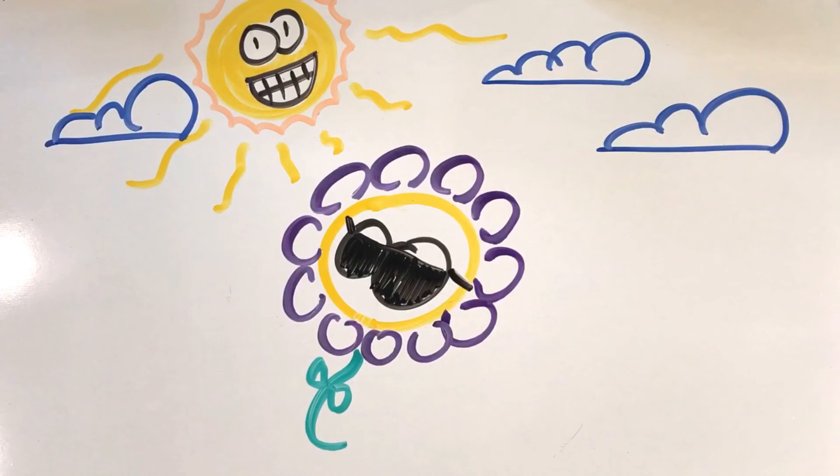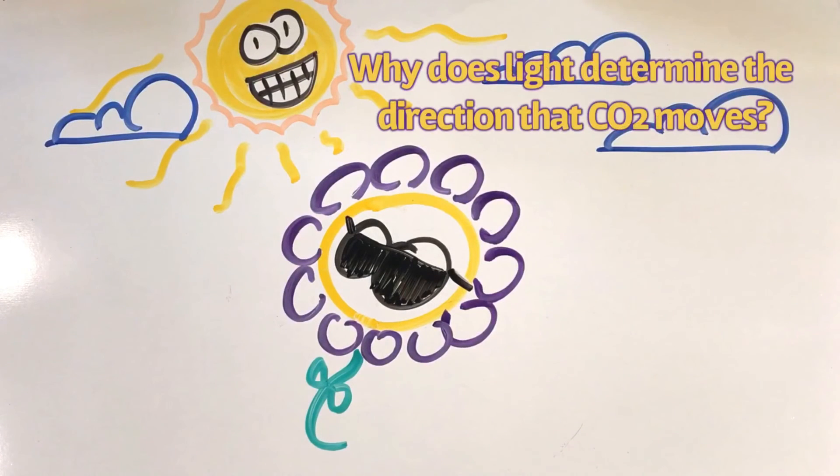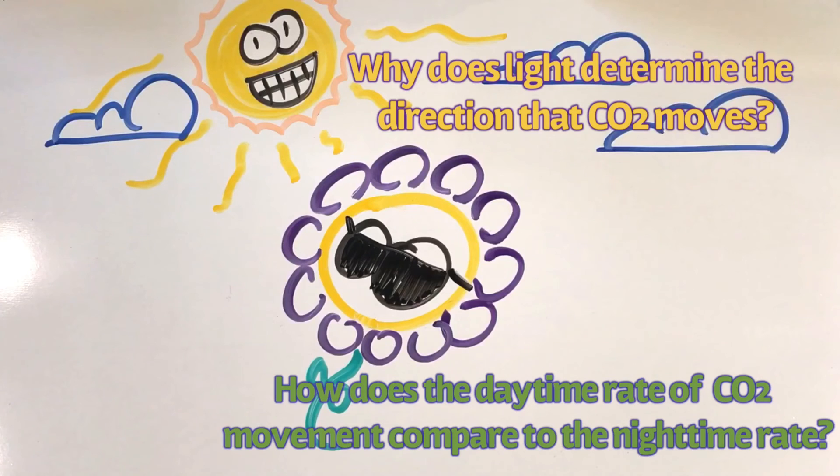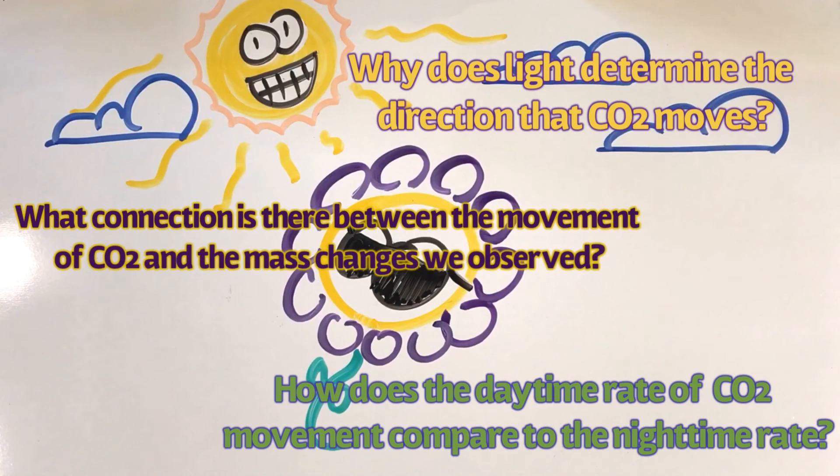Here are some questions that we came up with. Why does light seem to determine the direction in which CO2 is moving? How does the daytime rate of CO2 movement compare to the nighttime rate? What connection is there between the movement of CO2 and the mass changes we observed in the other video? We'll address some of these questions in the final video on plants.